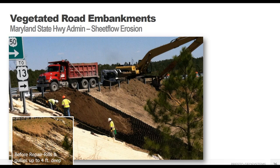Embankments along roadways have to deal with sheet flow runoff from impervious surfaces, like this slope for a Maryland State Highway Administration project. The sheet flow can cause sloughing of large sections of the upper topsoil layer, causing deep rills or gullies and preventing vegetation from taking hold. The GeoWeb system holds the soil in place while allowing the water to run over the surface, so no more gullies and vegetation can form deep roots to further stabilize the slope.